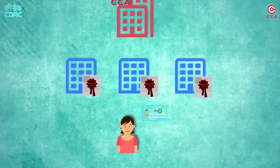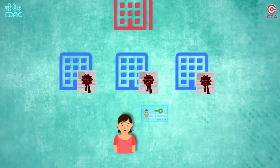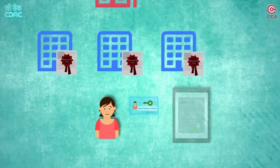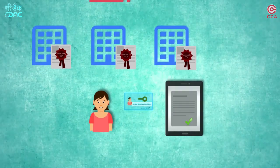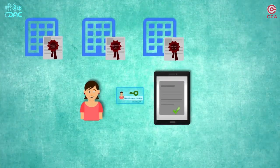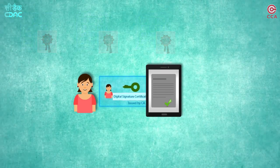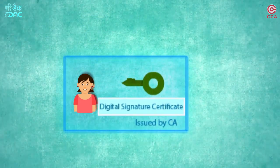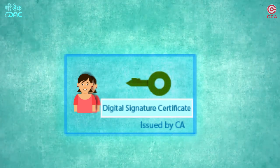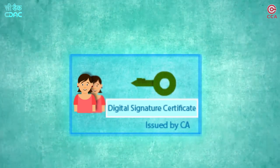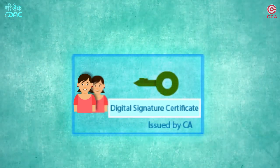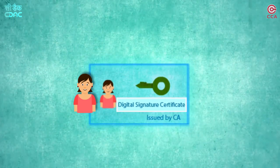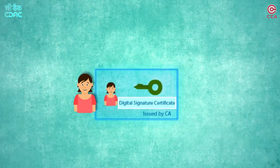Once a DSC is obtained, one can digitally sign documents that carry legal sanctity as per the Indian IT Act. A DSC is also a digital document that contains information about the user and his or her public key that it is certifying, and the details about the issuer of the certificate. Each DSC is digitally signed by the issuer.